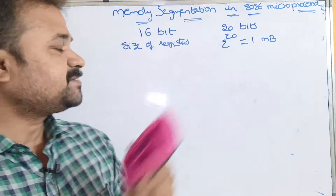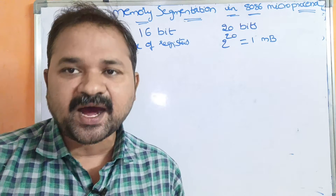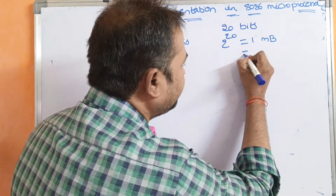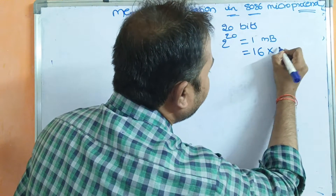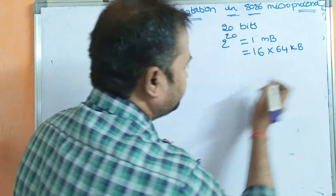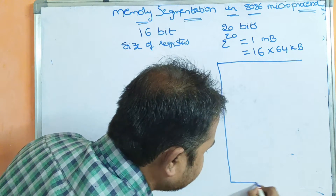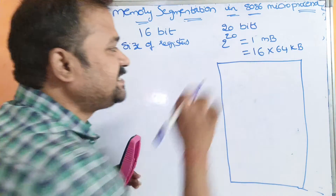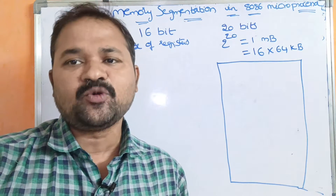So memory segmentation means the main memory is divided into various parts, which are called segments. Here, 1 megabyte means we can divide the main memory into 16 segments, where the size of each segment is 64 kilobytes.